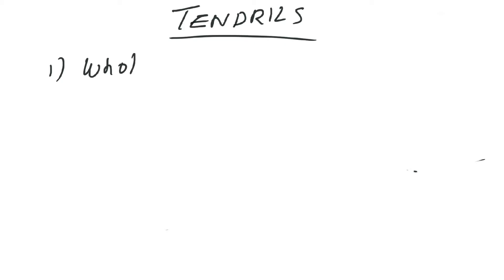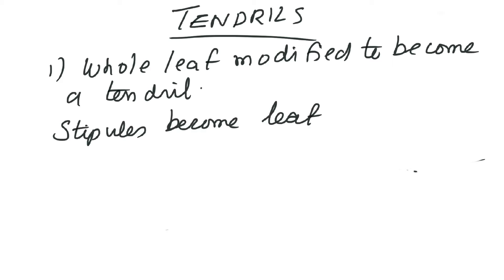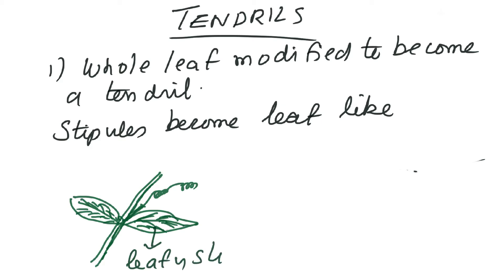An important question here is: if leaves are modified into tendrils, what parts of the plant carry out photosynthesis? That's one of the points we'll look into in detail. We start with the case where the whole leaf is modified to a tendril. Interestingly, in this case it is the stipules which become leaf-like. Stipules are the lateral growths from the base of the leaf meant for protecting the growing bud. So it's the stipules which carry out photosynthesis in this modification.